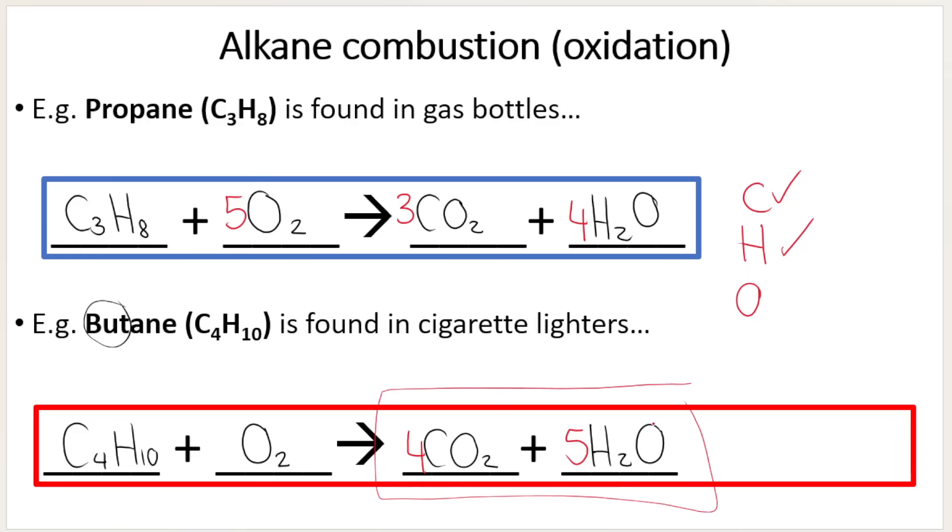Now I need to do the oxygens. So take a look at the right-hand side. I've got 4 times 2, 8 oxygens for the carbon dioxide, and 5 times 1, so 5 oxygens over here. 8 plus 5 gives me 13. As you can see, that's an uneven number, which makes putting a number over here difficult.